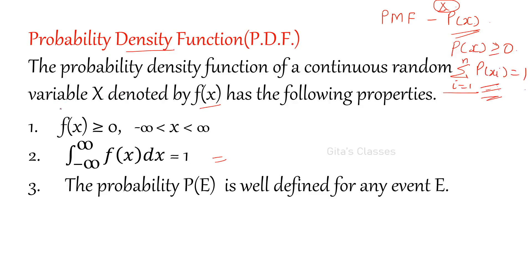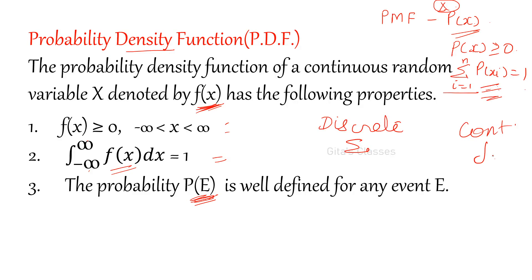In discrete we take sigma; in continuous we take integration. So, the integral from minus infinity to plus infinity of f of x dx should be equal to 1. These two conditions you can compare: greater than or equal to 0, and total probability is 1. One more condition we are defining here: probability of E should be well defined, because we are finding the integration and the integration should exist. f of x is our probability; we are defining probability as f of x here. For discrete, you have to take sigma; for continuous, you have to take integration. That is the only difference; otherwise, all the formulas are going to be the same.